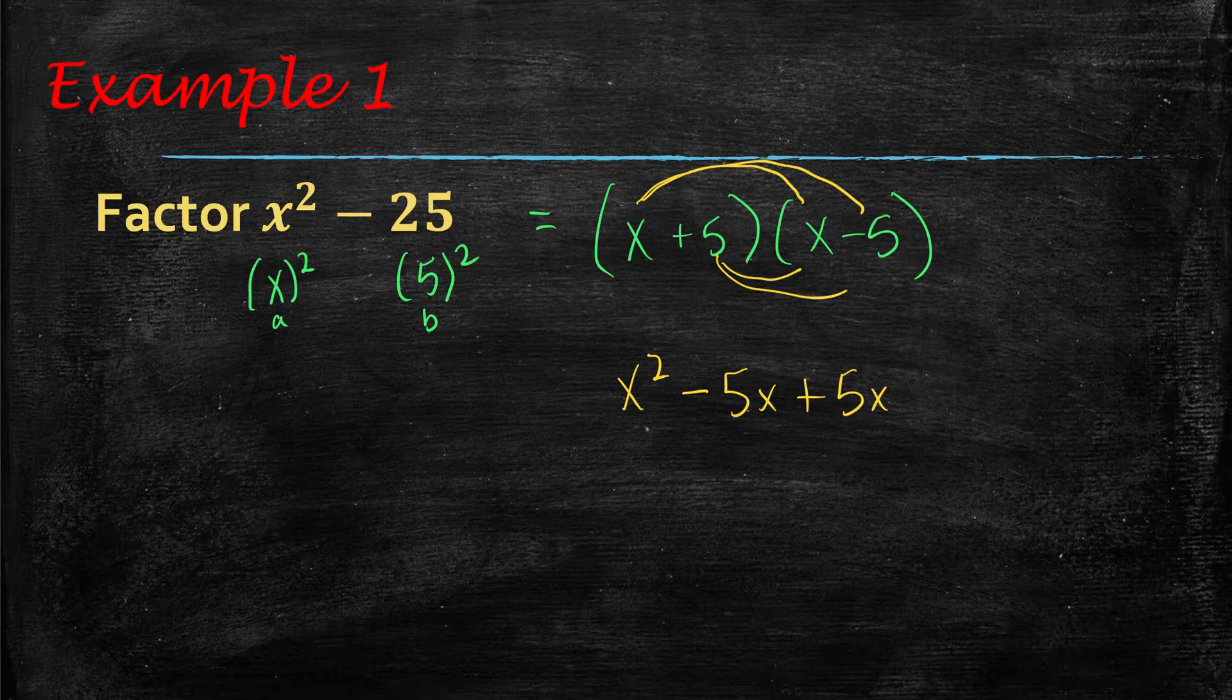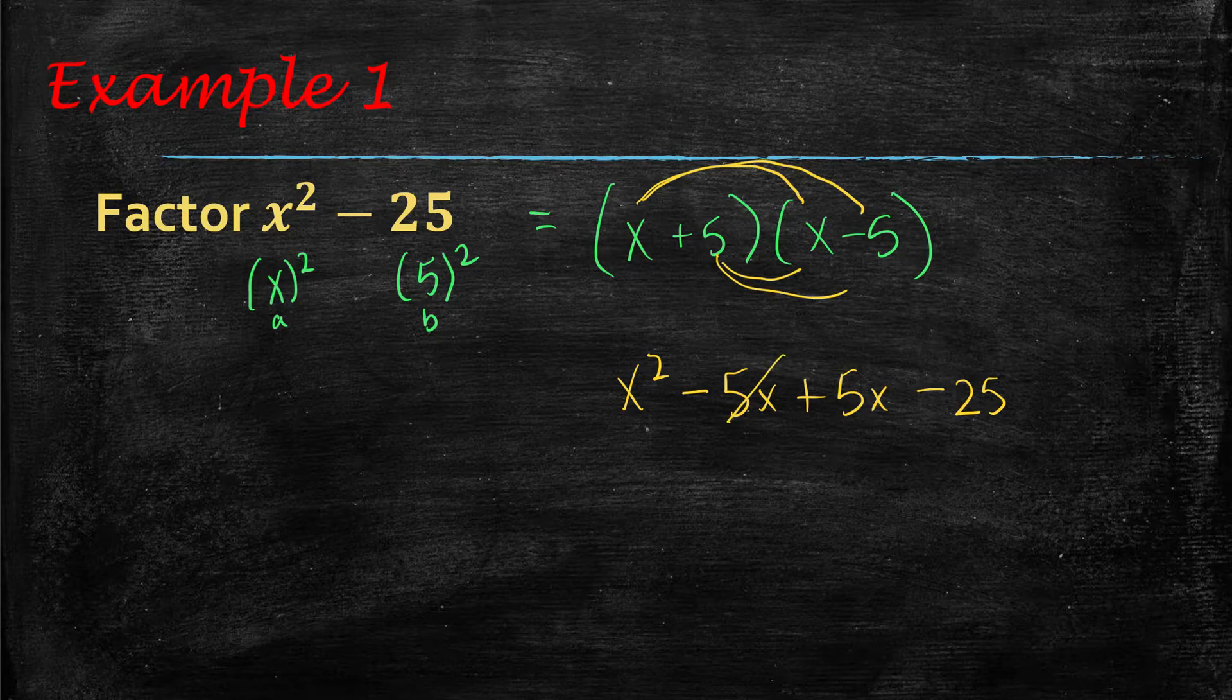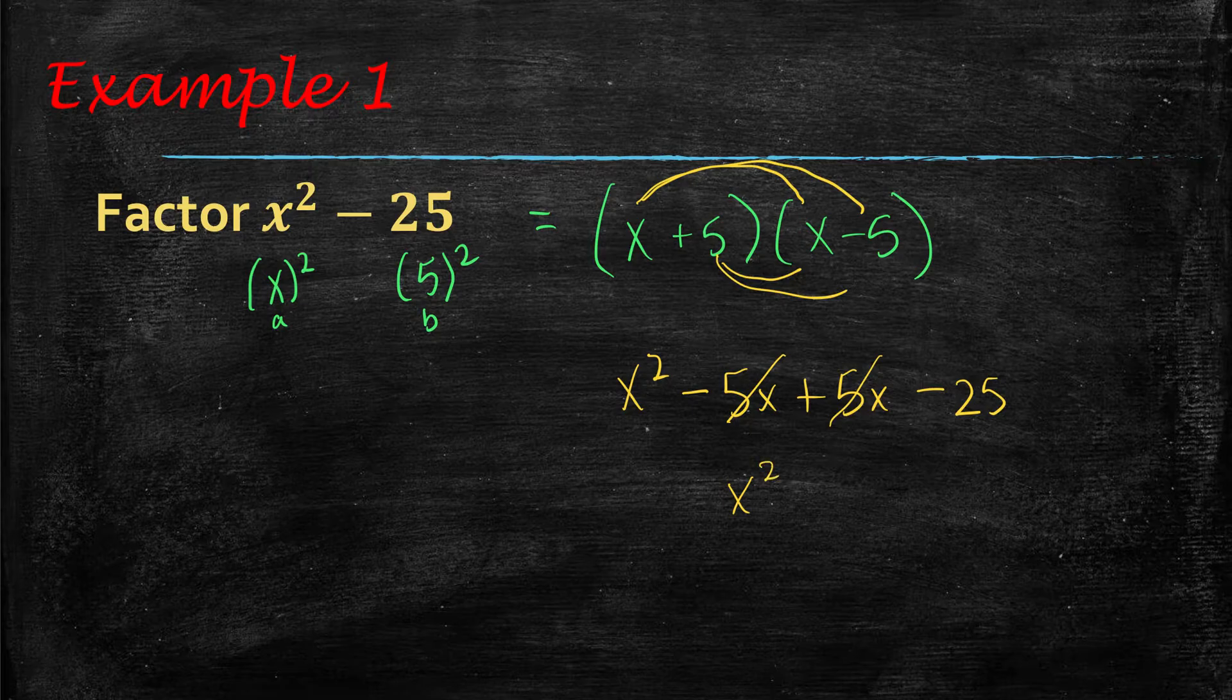and then 5 times a negative 5, which is negative 25. So putting that plus and minus in the middle there makes these cancel,